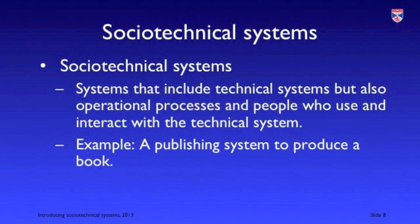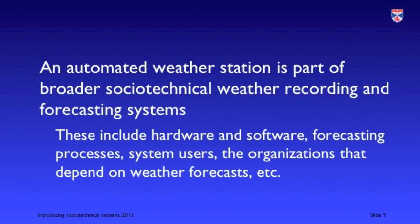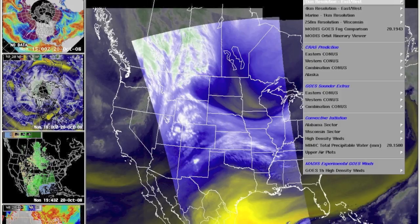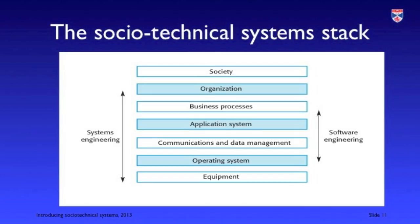A socio-technical system is a broader entity. It includes technical systems but also people who use and operate it and who are influenced by it. These people are aware of what's going on. So again, coming back to the book writing example, a publishing system used to publish a book is not a technical system — it's a socio-technical system. It involves all sorts of people working together with technical systems to create the book, and it's self-aware. Socio-technical systems know about themselves and their own existence. Another example would be a weather forecasting system, which might contain a technical subsystem such as an automated weather recording system, but there are all sorts of other activities going on to create the broader socio-technical system.